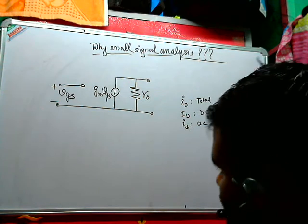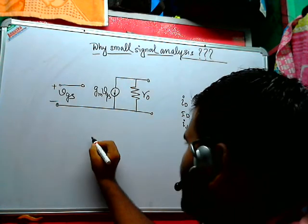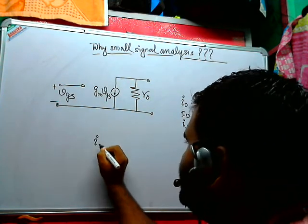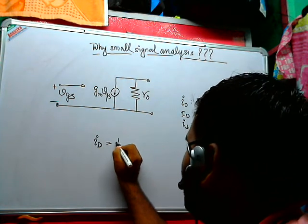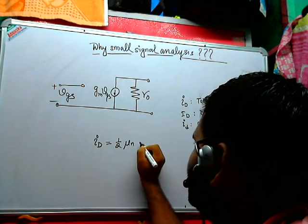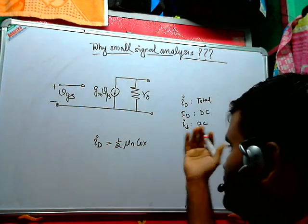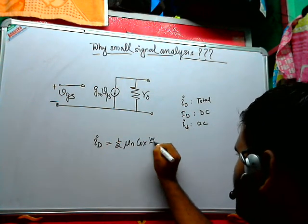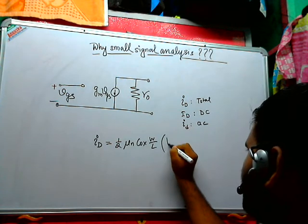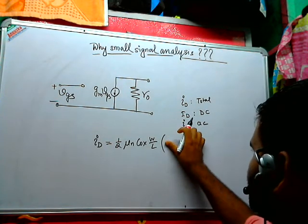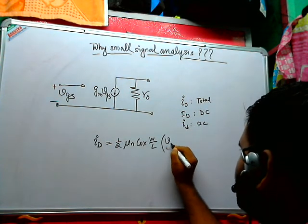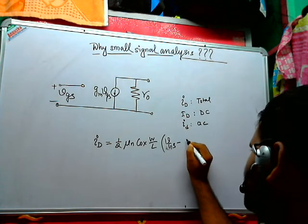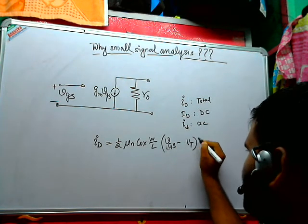Now we know for the MOSFET, the total current ID is basically half mu n C ox, for example for n-type n-channel MOSFET, C ox W by L, then VGS minus VT whole square.